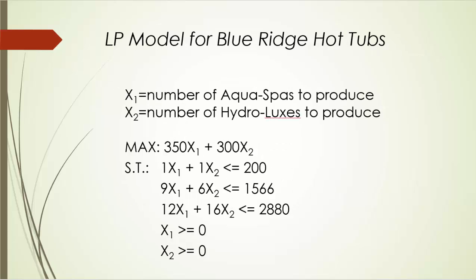Now, let's put everything together and take a look at the very first LP model we have formulated. I'd like to emphasize the importance of clearly defining the decision variables — without clear definitions, the objective function and constraints are meaningless. Here, 's.t.' stands for 'subject to,' meaning here are all the constraints. When it is your turn to formulate an LP model, please remember to clearly define all decision variables, formulate the objective function indicating whether it is maximization or minimization, and list all the constraints. In the next video, we'll solve this linear programming problem using a graphical approach.